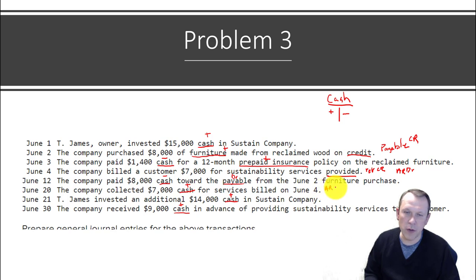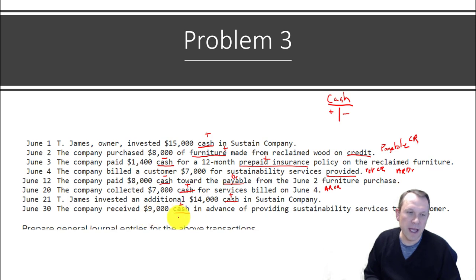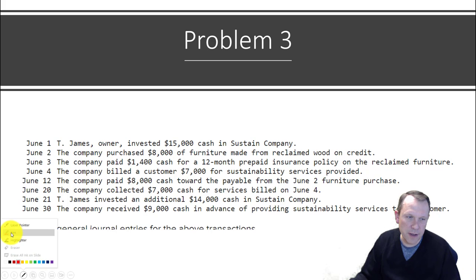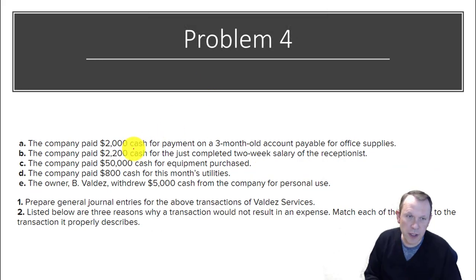The company collected $7,000 cash for services billed. We're getting cash, so that's our debit. We already counted the revenue, so our Accounts Receivable from earlier will now be our credit. T. James invested an additional $14,000 cash — just like number one, cash comes in as a debit and Owner's Capital is our credit. June 30: cash received in advance for sustainable services not yet performed — that's Unearned Revenue, which is our credit.